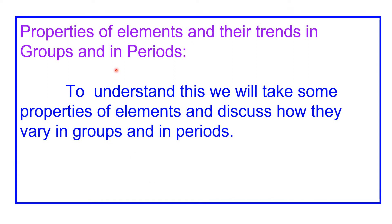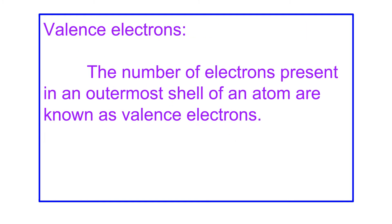Now let's look at the properties of elements and their trends in groups and periods. To understand how properties change in a group or period, we will take some specific properties and discuss how they vary. The first property is valence electrons. What are valence electrons? The number of electrons present in the outermost shell of an atom are known as valence electrons.